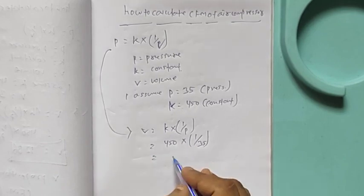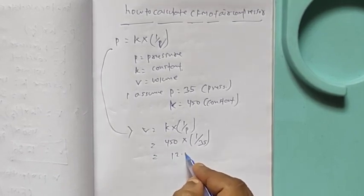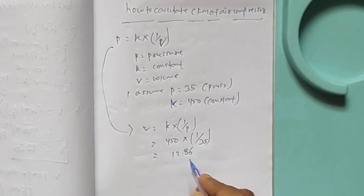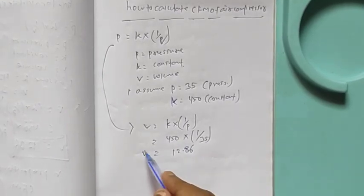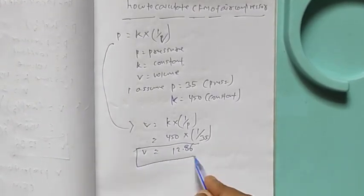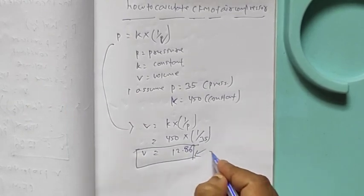Then final calculation is 12.86. V equal to 12.86. This is my final value.